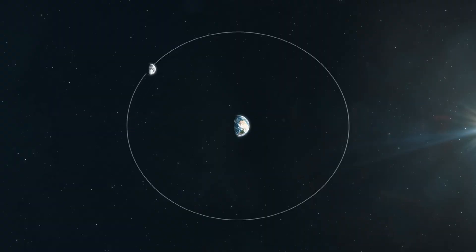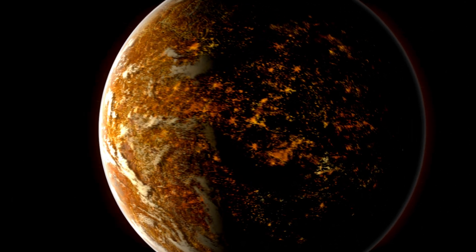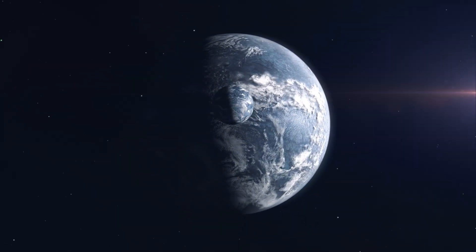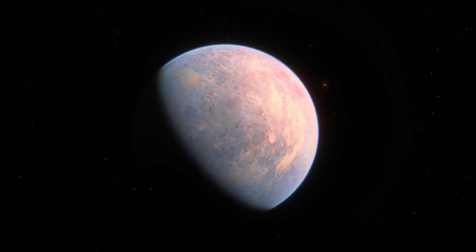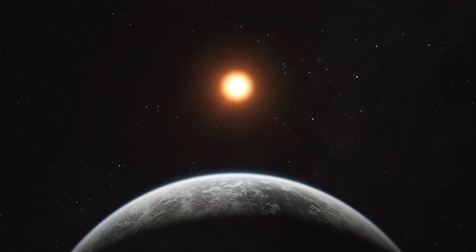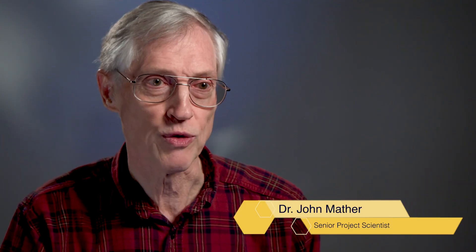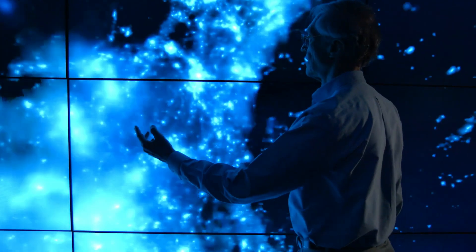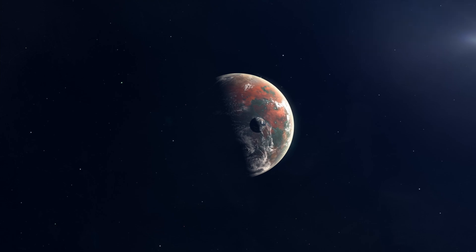Proxima b is much closer to its star, at only 0.05 astronomical units, while Mercury is at a distance of 0.39 astronomical units from the Sun. This proximity would make Proxima b an extremely hot planet, but because Proxima Centauri is a dim red dwarf, the planet receives only 60% of the energy that Earth receives from the Sun, placing it in the habitable zone where life could exist.